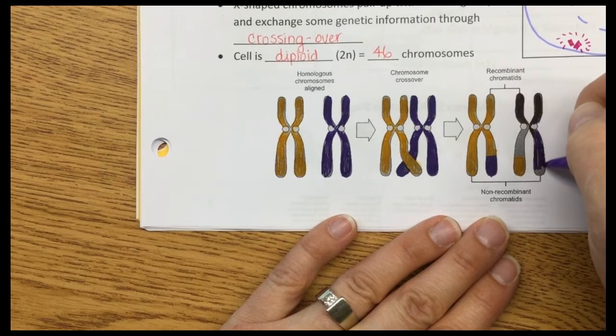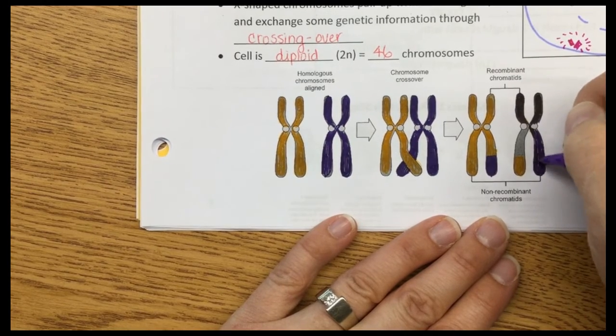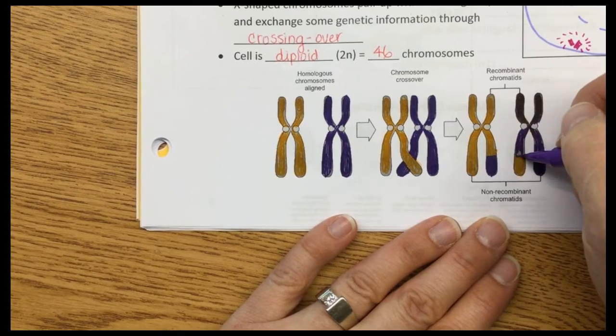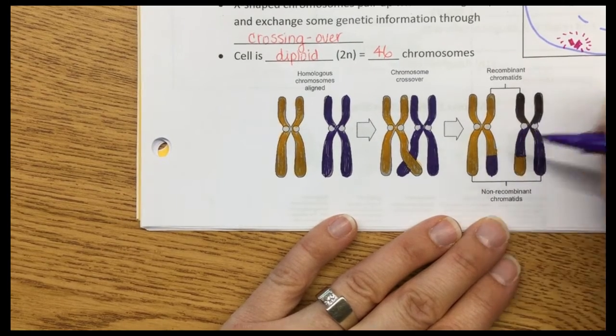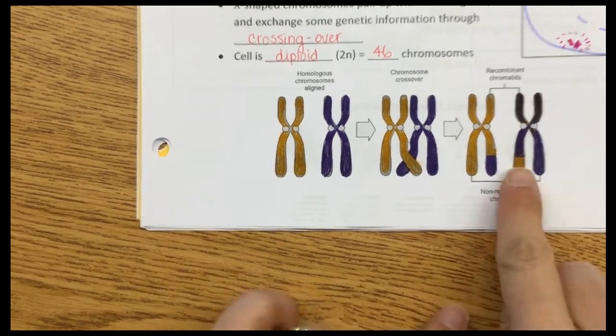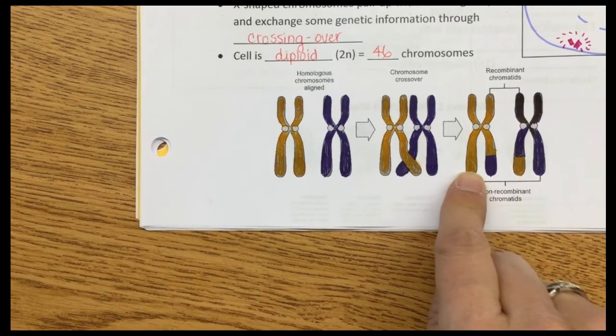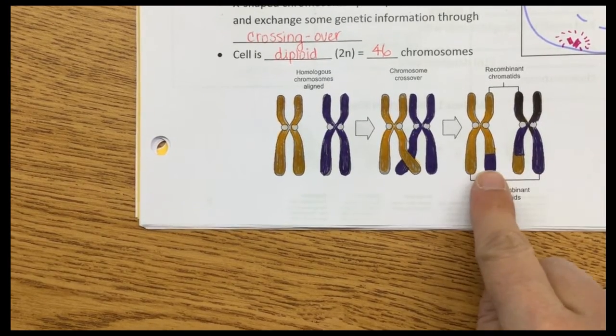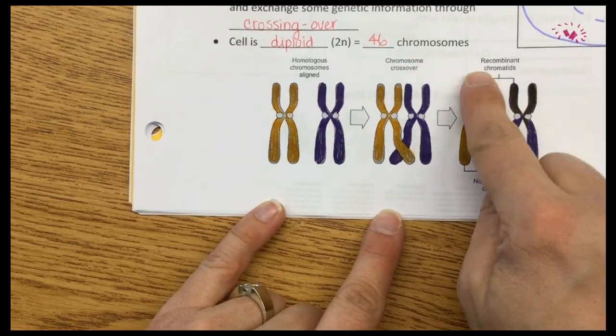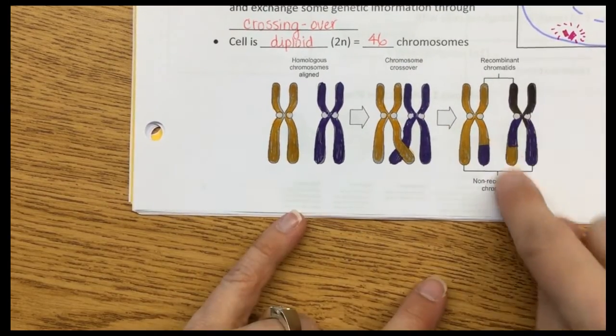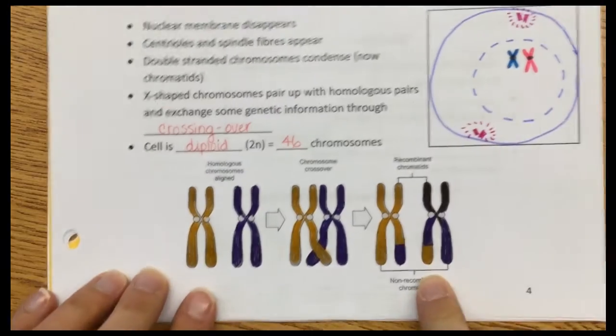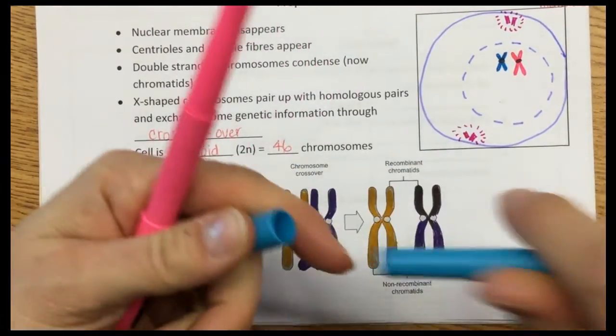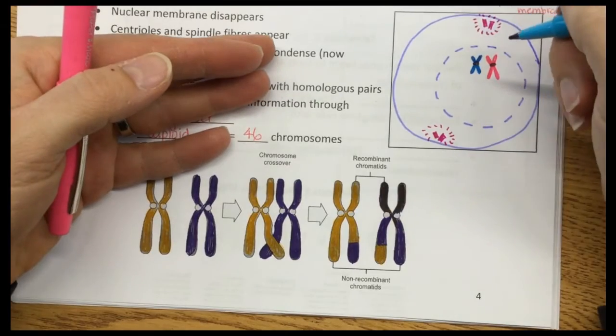Now our purple one has some stuff from the yellow one, and our yellow one has swapped some information from the purple one. If this was eye color, maybe on the yellow one it had brown eyes and on the purple one it had blue eyes. Now we've swapped around and now this homologous chromosome has that eye color and this one has that eye color. We're going to show the same thing up here with our pink and our blue.